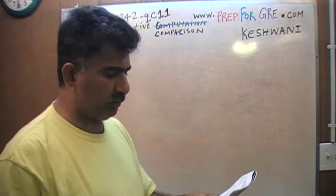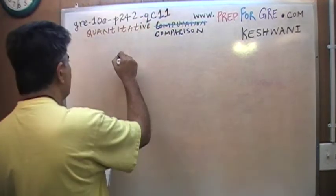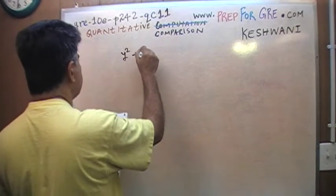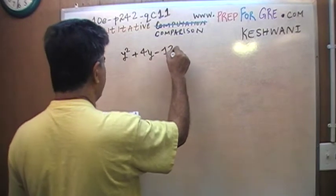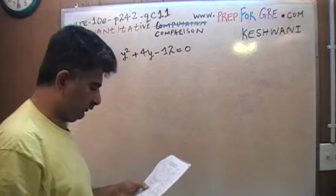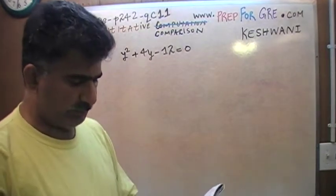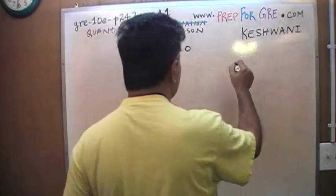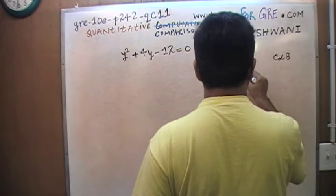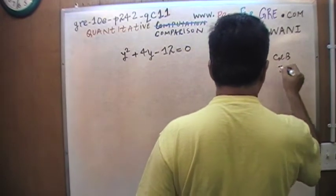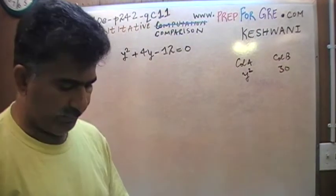They give you a quadratic equation: y squared plus 4y minus 12 equals 0. And they simply want you to compare the quantity y squared with 30.